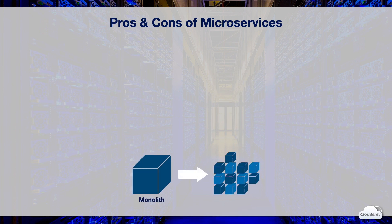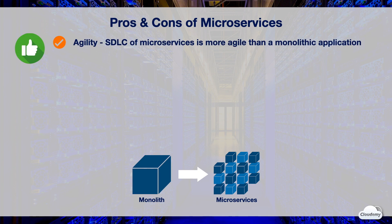Microservice is an architectural style that breaks a monolithic application into a collection of loosely coupled and stateless services running in containers. Although microservices can run in a non-containerized environment, containers have become the preferred option. Microservices improve the agility of the software development lifecycle and shorten the time to market. Each microservice is independent, making it much easier to develop and deploy new features than adding to a monolithic application. You can also use different programming languages and libraries for each microservice.